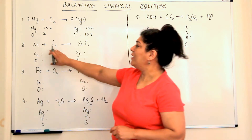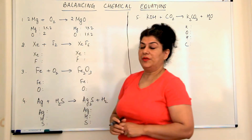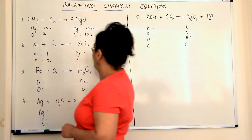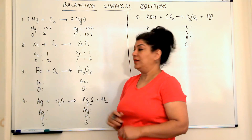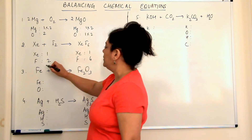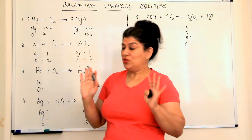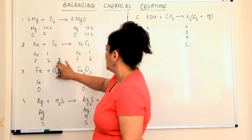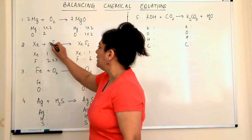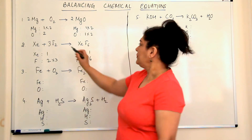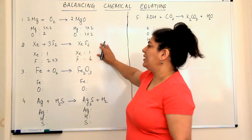Let's take another example. Xenon and fluorine combine to form xenon hexafluoride. How many xenons are in the reactants? One xenon, two fluorines. In the products: one xenon and six fluorines. Xenon is already balanced. Now for fluorine: there are two on the left and six on the right. We can only multiply, so what do we multiply two by to get six? We multiply by three. So we put a coefficient of three for fluorine — three times two is six, so fluorines are balanced. Xenon remains one on each side, so this equation is balanced.